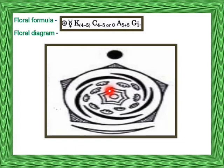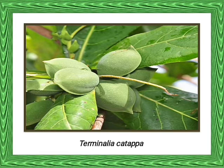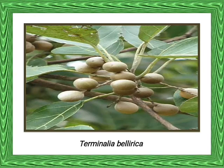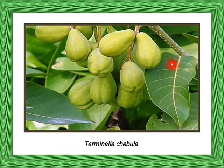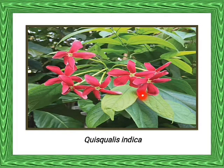Some common plants of Combretaceae family: Terminalia catappa, in Gujarati — jungle badam. Second, Terminalia bellerica, in Gujarati — beheda. Third, Terminalia chebula, in Gujarati — harde. Next, Quisqualis indica is the ornamental plant, known in Gujarati as Rangun Kipper or Rangun Vel.